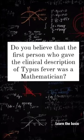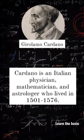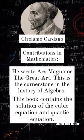Do you believe that the first person who gave the clinical description of typhus fever was a mathematician? He is none other than Girolamo Cardano, an Italian physician, mathematician, and astrologer who lived from 1501 to 1576.